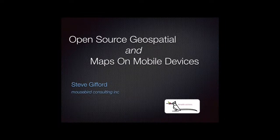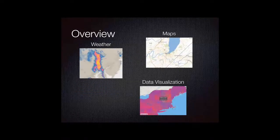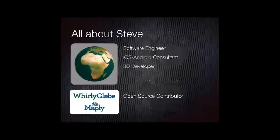I'm going to talk a little bit about open source geospatial and map tools for mobile devices. First I'm going to talk about weather apps and how they make use of these sorts of toolkits, map display, and my personal favorite, data visualization, which is kind of a catch-all term for anything not in the other two categories. I make a toolkit called WhirlyGlobe Maply.